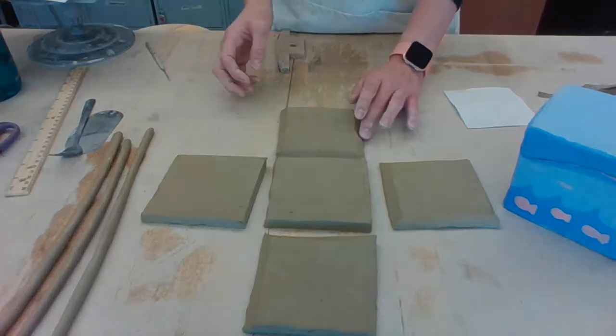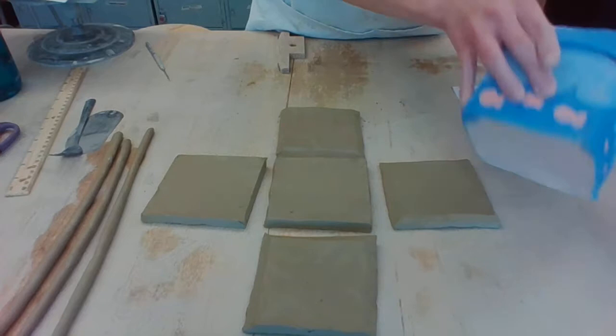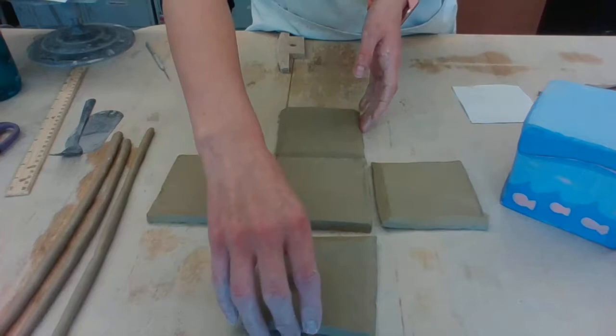Alright, so after I made all six slab walls of the box, I'm going to put it in this layout where the bottom, this one, is the bottom of our box and all the sides are the walls. So that way it makes sense later when we're assembling.